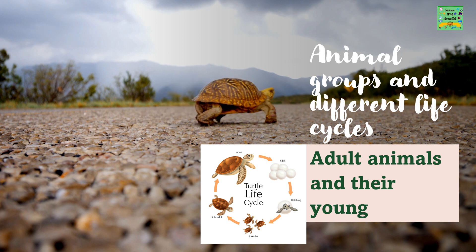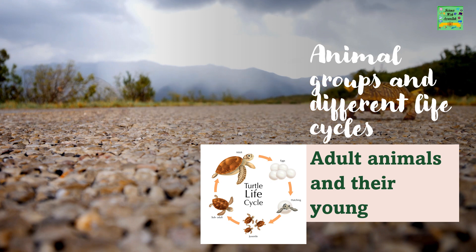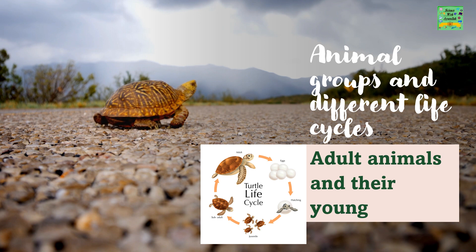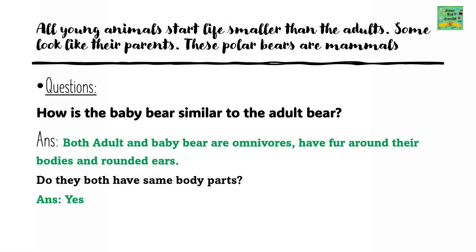Animal groups and different life cycles: adult animals and their young. All young animals start life smaller than adults. Some look like their parents. These polar bears are mammals.